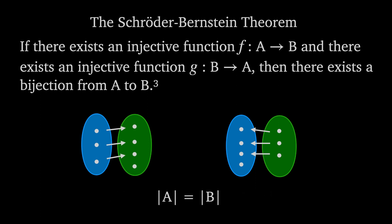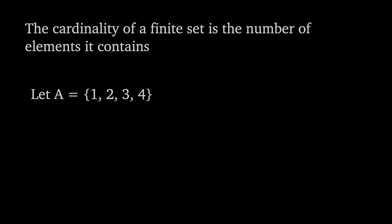I guess the next question which follows from this is, if two sets are the same size, does this mean that there's a bijection between them? We call the size of a set its cardinality. And the cardinality of a finite set is the number of elements it contains, so if we let A equal the set containing 1, 2, 3 and 4, then the cardinality of A, as indicated by these vertical lines, is 4.